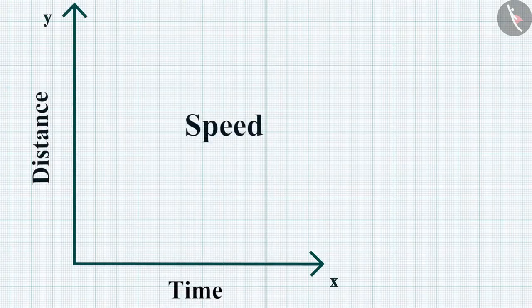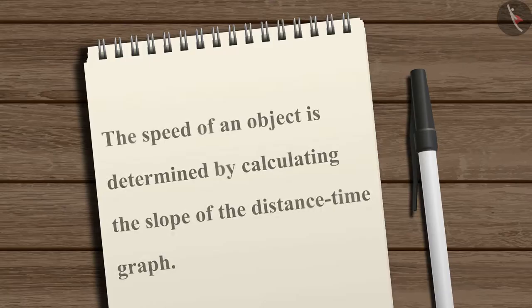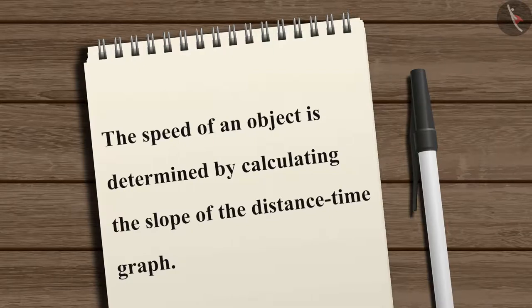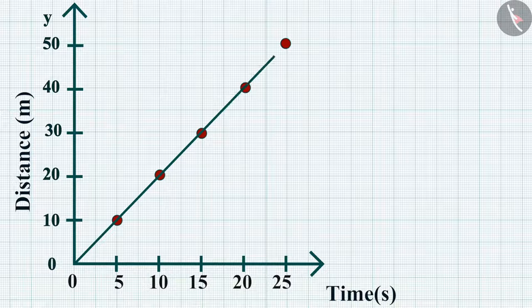We can also determine the speed of an object from the distance-time graph. The speed of an object is determined by calculating the slope of the distance-time graph. Let's calculate the speed of an object using the previous distance-time graph.